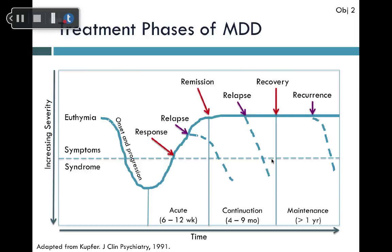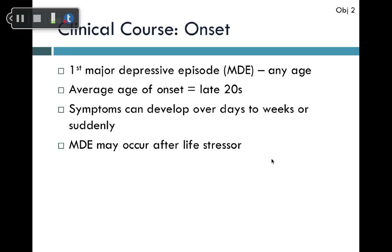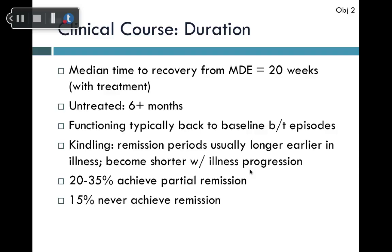The average age of onset for a first major depressive episode is in the late 20s. Symptoms can develop over days to weeks or suddenly, with sudden onset typically following a life stressor such as job loss, breakup, or divorce. With treatment, episodes typically resolve in four to five months; untreated episodes can last six months or significantly longer, even years.